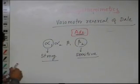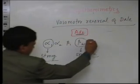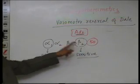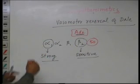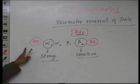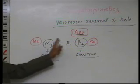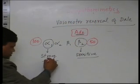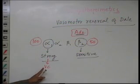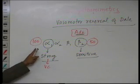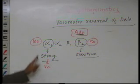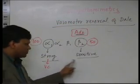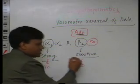For example, suppose beta2 can be stimulated with 50 molecules of adrenaline, but those 50 cannot stimulate alpha1 — for that we require 100 molecules. So if we give more than 100 molecules, both are stimulated and the effect is due to alpha1, causing vasoconstriction and increased BP. But if we give between 50 and 100 molecules, only beta2 is stimulated, causing vasodilation and decreased blood pressure.